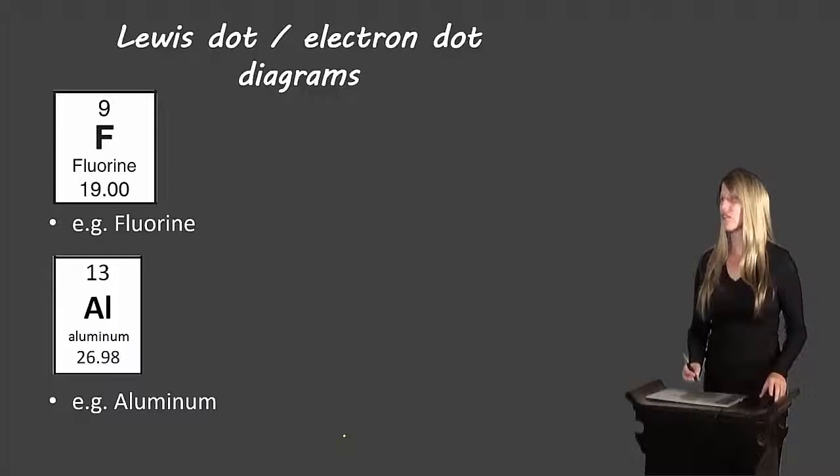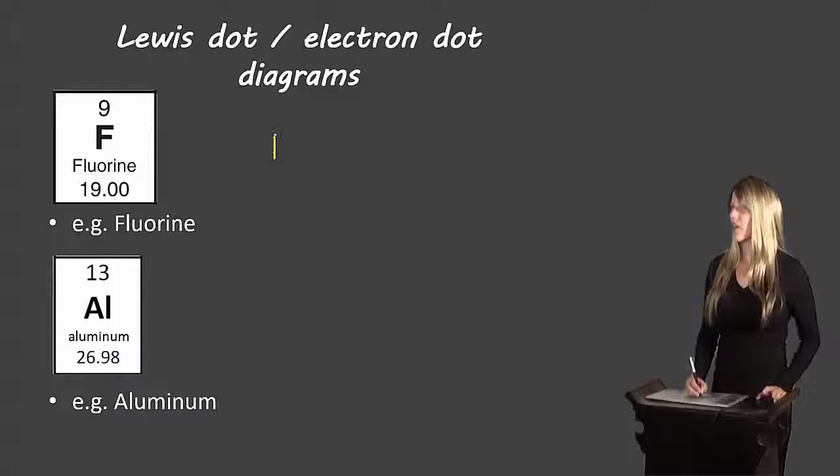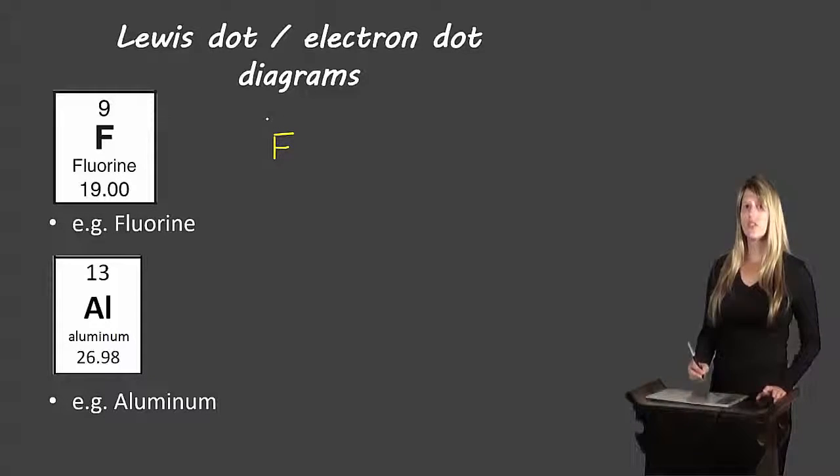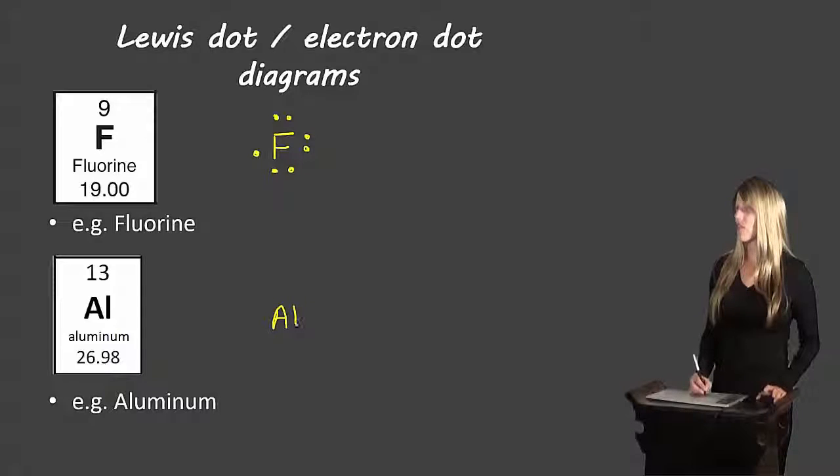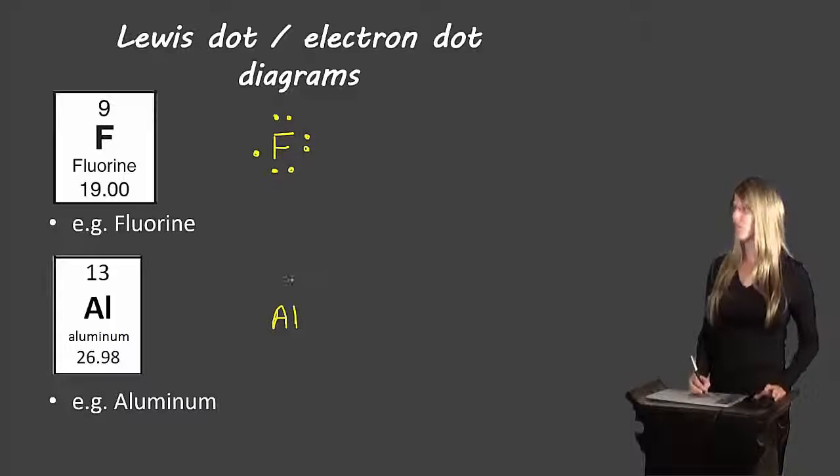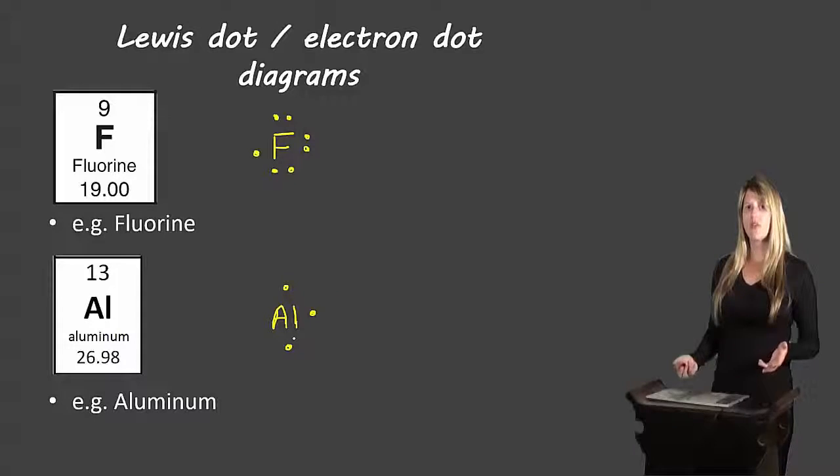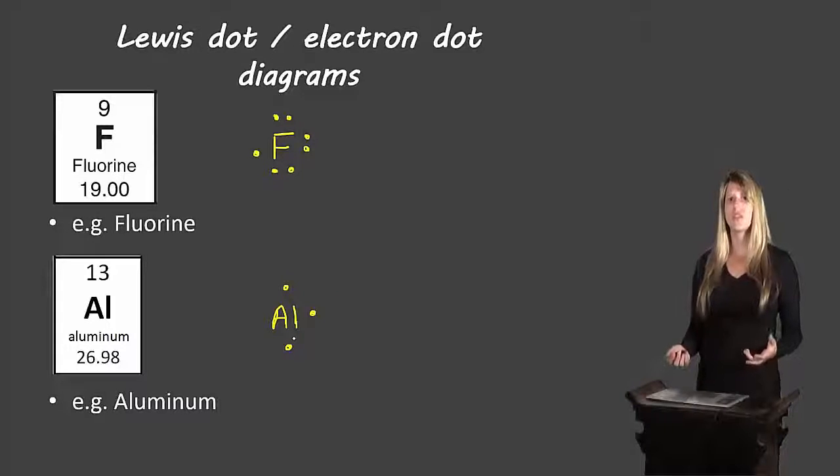So let's take a look at how we would draw these. So fluorine we'll start off by drawing F which would be the symbol for fluorine in the center and fluorine comes in the second last column which means it's going to have seven valence electrons. So we would draw fluorine like this. Aluminum is in the third column or the third family which means it will have three valence electrons like this. So this is how we would draw Lewis dot diagrams only representing those valence electrons and we can quickly find the number of valence electrons just by looking at its position in the periodic table.